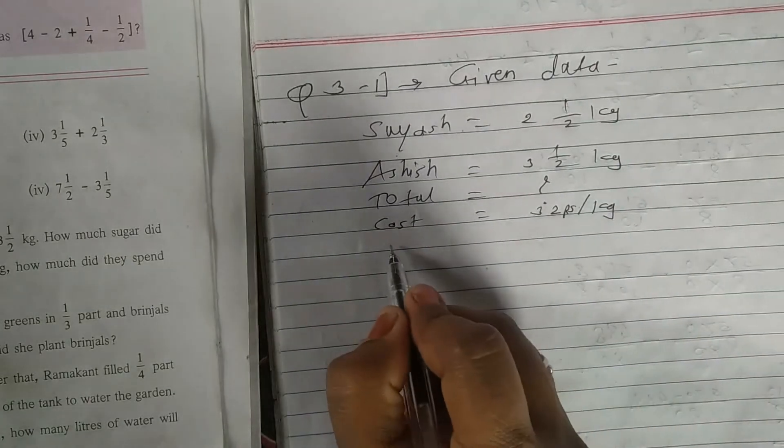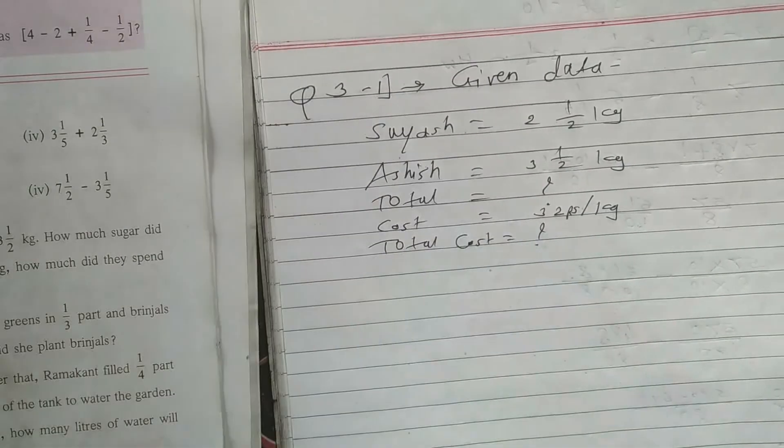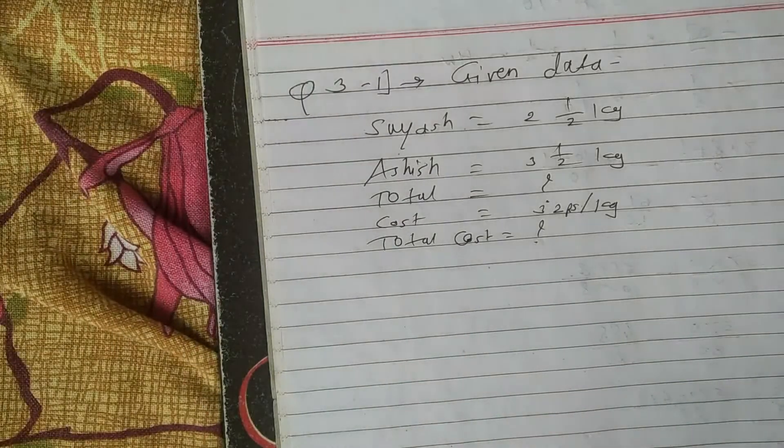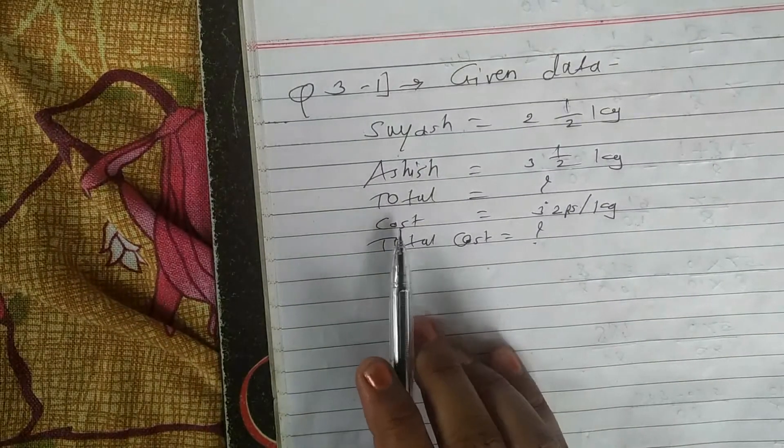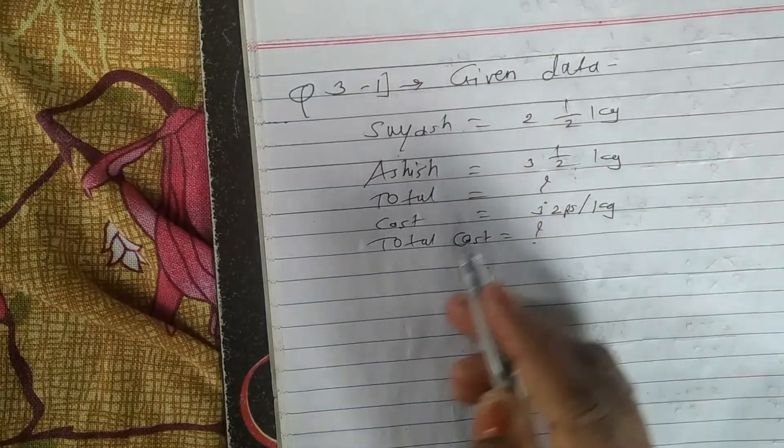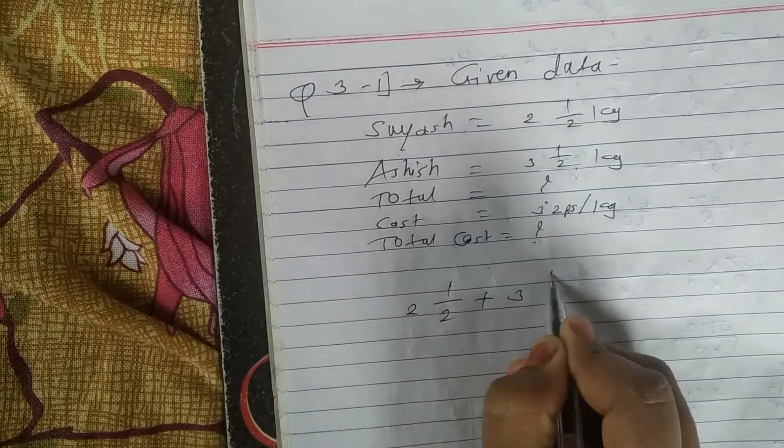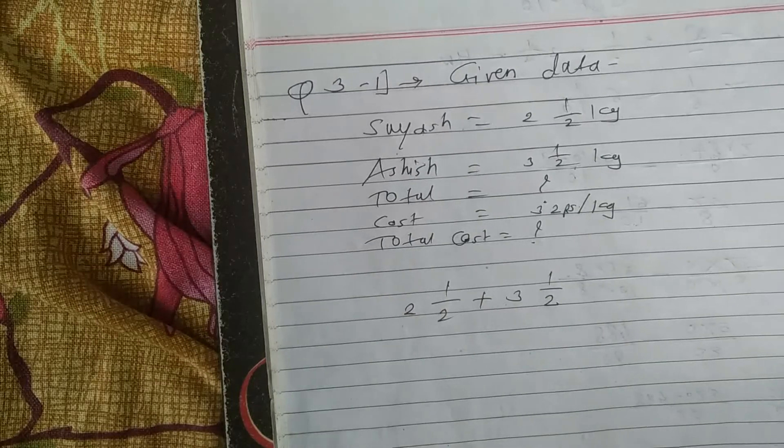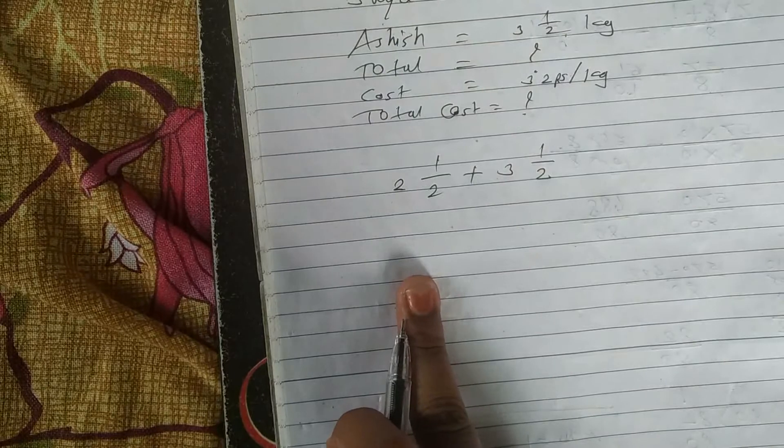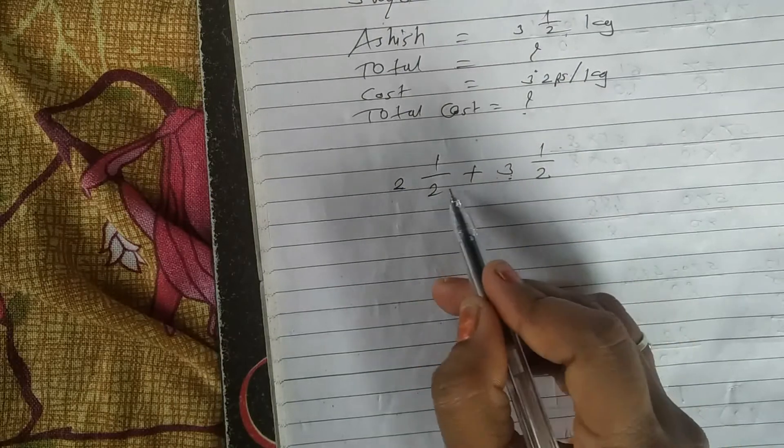Total cost question mark. So how to solve the problem. Total means all together question mark, so we have to do first addition. First we have to calculate two and half plus three and half. So base already same, so simple one problem. This problem I told you already, you can solve by this method. This two complete number plus this three complete number, two plus three five and half plus half one so six will be your answer.